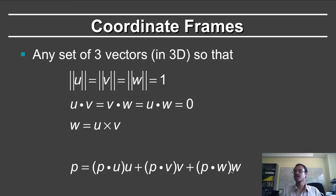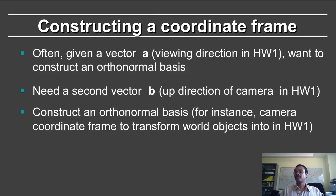How do you construct a coordinate frame? So the first question is why do you want to construct a coordinate frame? It's often the case that you are given a vector a, which in homework 1 will be the viewing direction. You want to create an orthonormal basis from this.